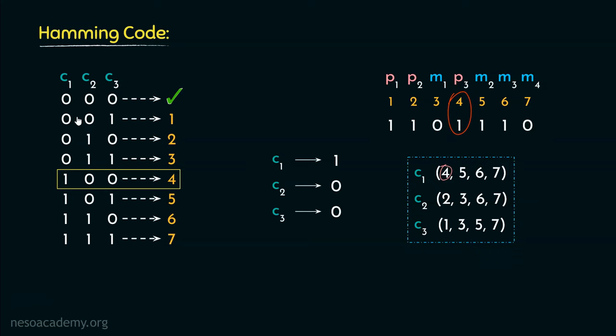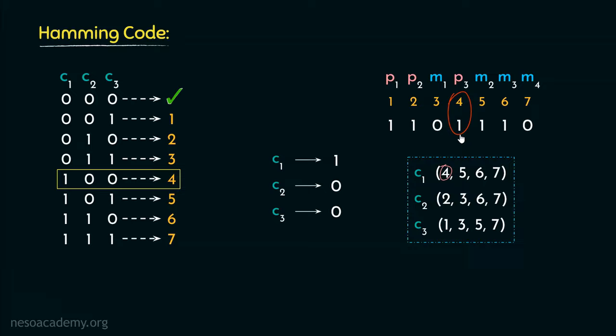In case of error correction, the knowledge of the error is not enough — we should also be able to pinpoint and correct the erroneous bit. So in this session we acquired the understanding of how Hamming code helps us in single bit error correction. In the next session, we will solve some interesting numerical problems. I hope to see you in the next one. Thank you all for watching.